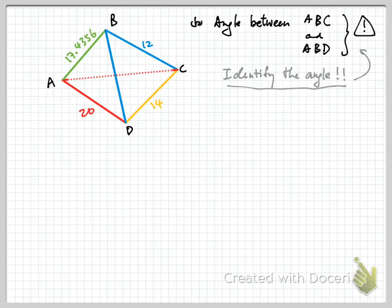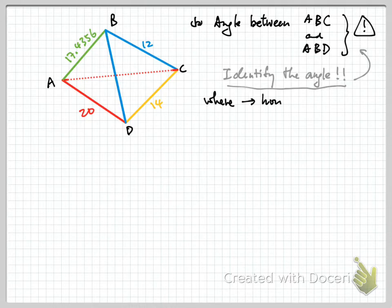Next we have part B. Part B asks for the angle between planes ABC and ABD. The first important step before any calculation is to identify the angle. Before you answer the what question, you must answer the how question. Before the how question, you must answer the where question. These are the three important questions in a 3D problem.